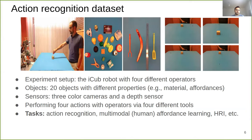The last data set that I will introduce is the action recognition data set. In this data set, the operator performs four basic actions such as pulling an object, pushing an object, and moving an object from left to right. The operator also performs these actions using four different tools. We capture depth and color images for an object before and after executing an action.